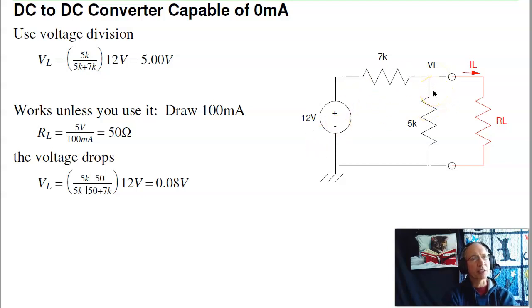However, it only works if you don't use it. For example, suppose I want to draw 100 milliamps at 5 volts. 100 milliamps at 5 volts is 50 ohms. If I connect a 50 ohm resistor across the load, then what happens is these two become in parallel, and the voltage goes from 5 volts suddenly down to 0.08 volts. So this is a 5 volt power supply that disappears as soon as you try to use it.